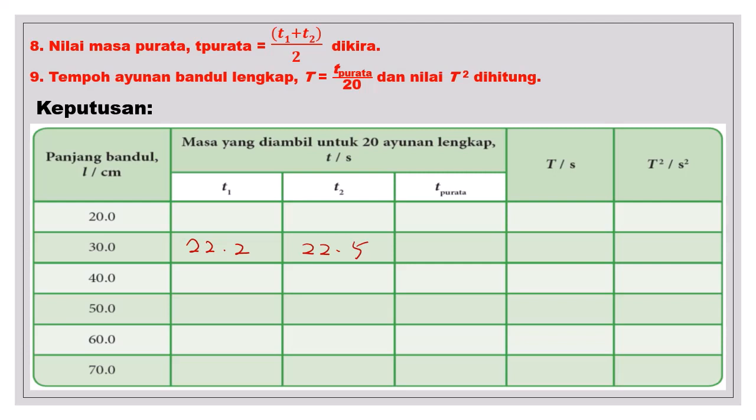Jadi bagaimana mengkirakan T purata? 22.2 tambah dengan 22.5 bahagi 2. Jadi akan dapat... kemudian jawapan sini kita tuliskan dalam 2 tempat perpuluhan. Jadi sini catatkan sebagai 22.35.